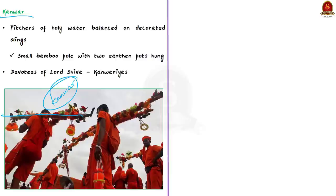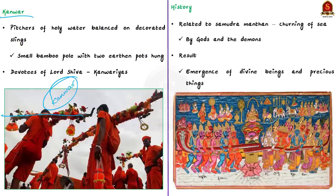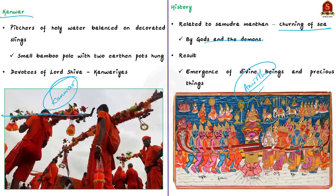When was the Kanwar Yatra started? The legend of the ritual goes back to the Samudra Manthan — the churning of the sea — which was the joint effort of the gods and the demons. This is one of the best-known episodes in Hindu mythology, which explains the origin of Amrita. According to the legends, the holy month of Shravan was when the gods and demons decided to churn the ocean. Many divine beings and precious things emerged from the Manthan along with Amrita, as well as innumerable gems and jewels, and also a highly potent and lethal poison.